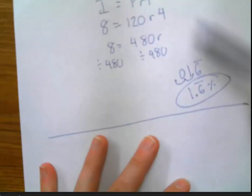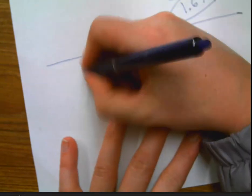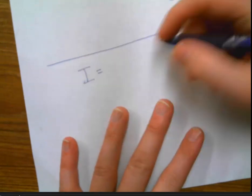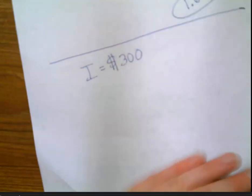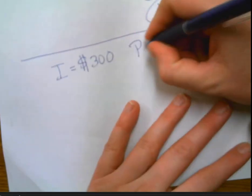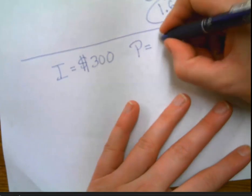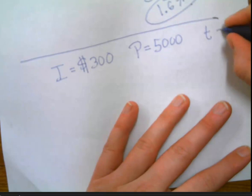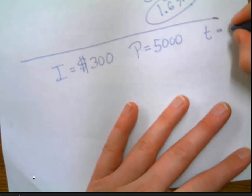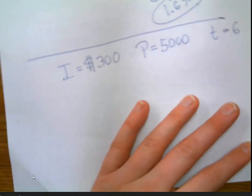It's the exact same thing. So we've gone over how to find the principal. We've gone over how to find the rate. It's the exact same thing for time. So if I know that I invested, and I earned $300, we're going to jump it big, and my initial amount was $5,000, and I left it in for six years. What rate was it?